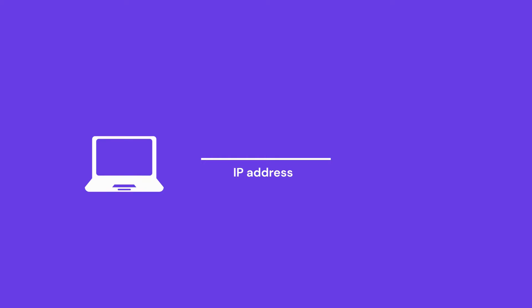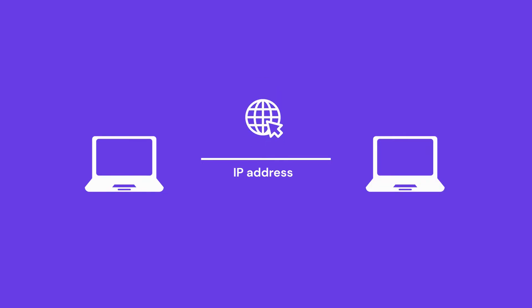When setting up a web server or software on a web server, 127.0.0.1 is used to point the software to the local machine. When you call an IP address from your computer, you usually try to contact a different computer over the internet. However, with the loopback address, the localhost is always your own computer.